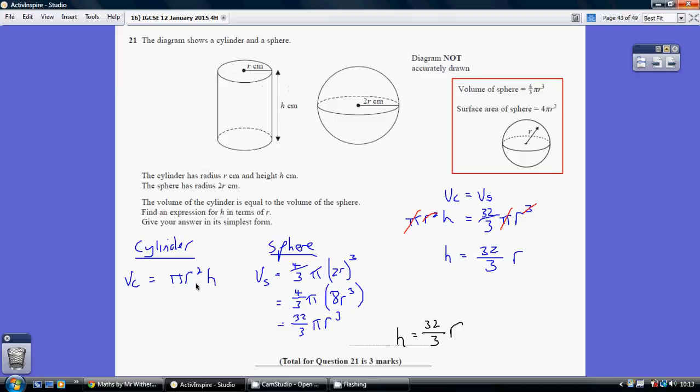So we'll just stop there and just do that in one line. Now with regard to the sphere, the volume of a sphere is given. It is 4 thirds pi R cubed. So 4 thirds pi, but on this occasion the radius is 2R. So it's 2R all cubed.